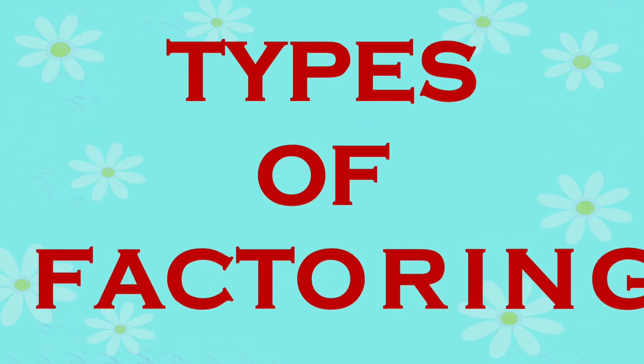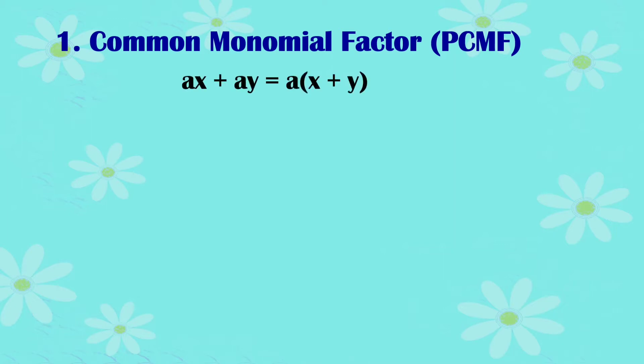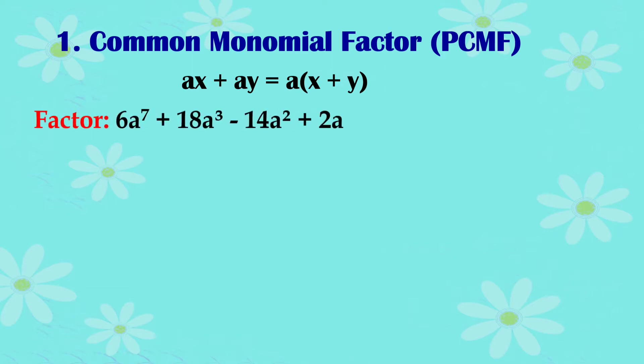Factoring. Types of factoring. Number one: Common Monomial Factor (CMF). The pattern is ax plus ay equals a times the quantity x plus y. Let's factor 6a raised to the 7 plus 18a cubed minus 14a squared plus 2a.